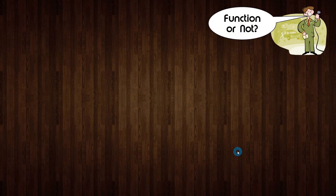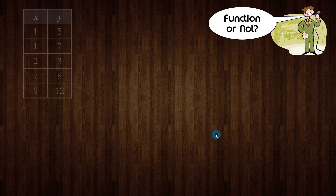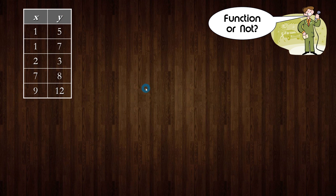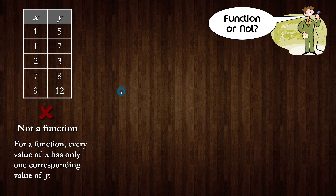We can also see this in a table of values, with input or x values on the left and output or y values on the right. Do we have a function here? No, we do not. The problem value for x is 1 — it corresponds to two different y values: 5 and 7. So right away we know we do not have a function.